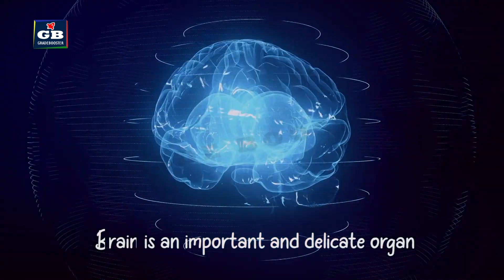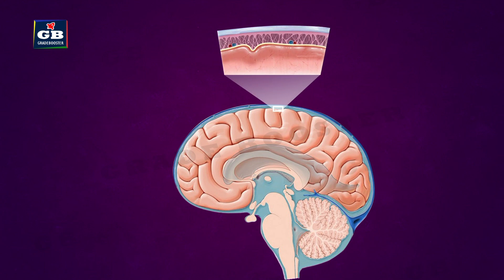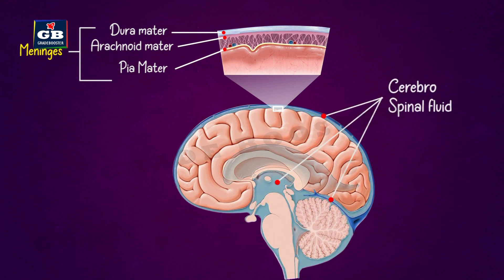The brain is an important and delicate organ, so it has to be protected well. The brain is covered by a fluid-filled, balloon-like structure made up of three layers. These layers are called meninges, and the fluid present in between these layers is called cerebrospinal fluid.